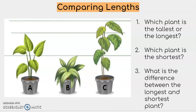Now, what is the difference between the longest and shortest plant? That's kind of a trick question. To find the difference, we would need to know the exact measurement for plants B and plant C, and then we could find the difference. Based on this slide, we can just tell which plant is the longest, which plant is the shortest, but we can't tell the difference between the plants yet.